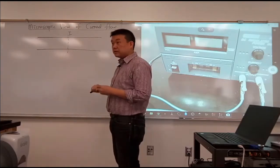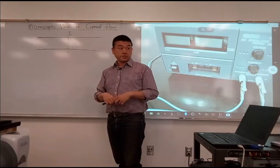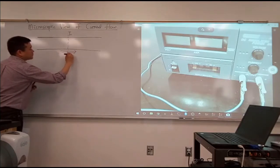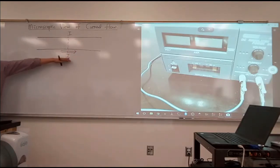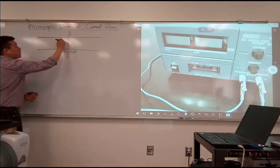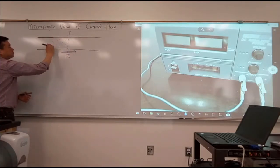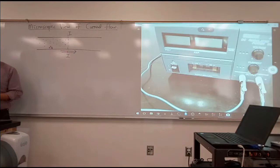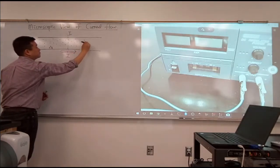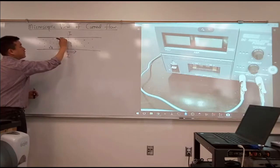I want to actually consider the movement of individual charges. So let's say I have current flowing from left to right, some amount I, and I want to describe this in terms of the actual makeup of this material. So what I want you to imagine is that within this conductor are three charges, each of some charge plus Q, which are moving at some speed to the right.